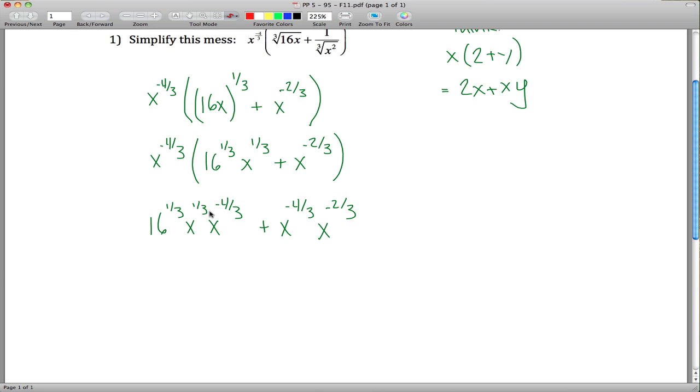So what we do is add the exponents. The question is, what is 1 third plus negative 4 thirds? Well, that's negative 3 thirds, which is just negative 1.